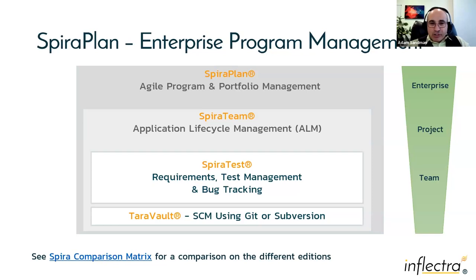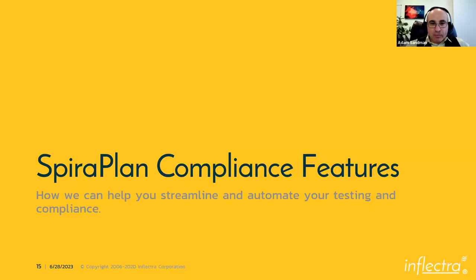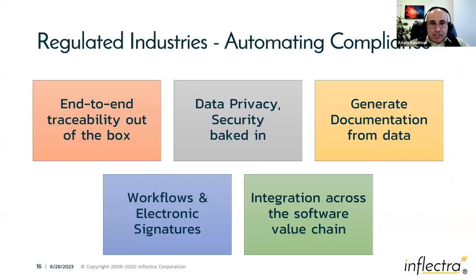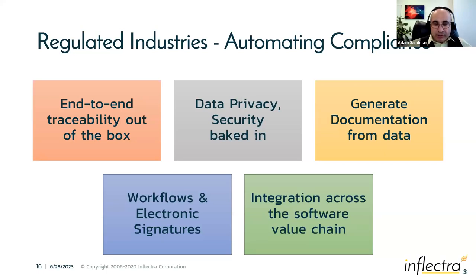SpiraPlan is the enterprise version. For smaller companies, SpiraTeam is probably sufficient; for larger organizations, look at SpiraPlan. Spira has end-to-end traceability out of the box — we can link requirements to test cases, tasks, risks, code, code snippets, test runs, defects, and issues. All that traceability is built in on day one; you don't have to install other plugins or add-ons.